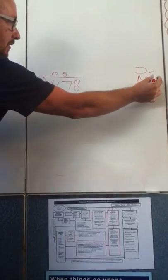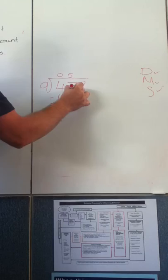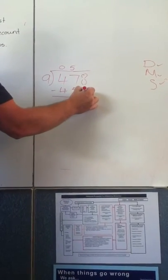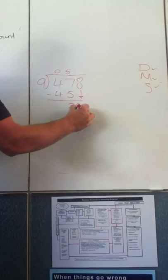Now we do the subtract. 47 take away 45, you're left with 2. Then we bring down the next number, which is 8. Now we have 28.